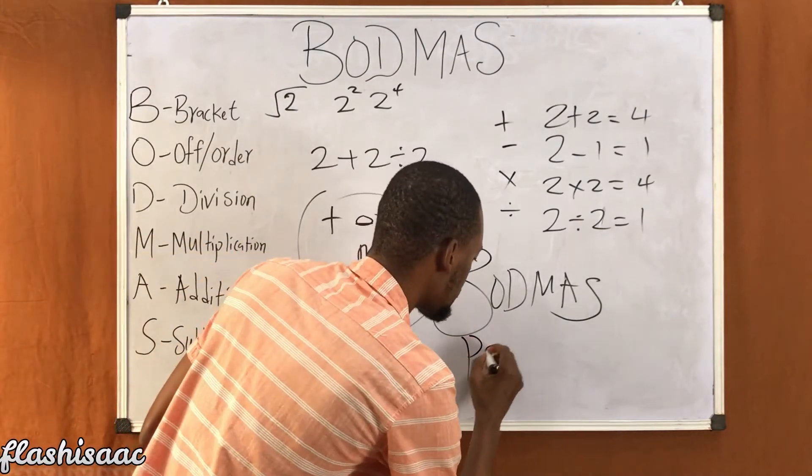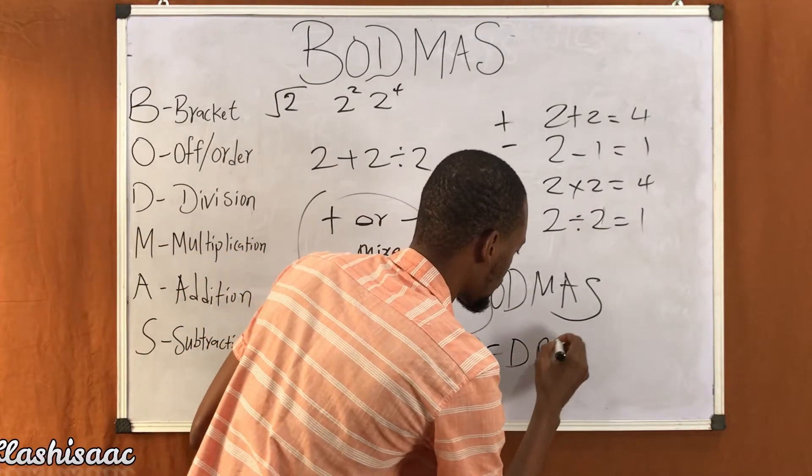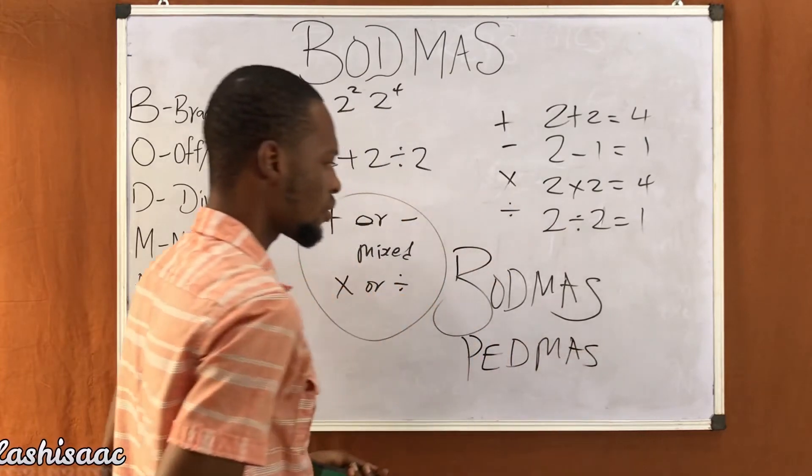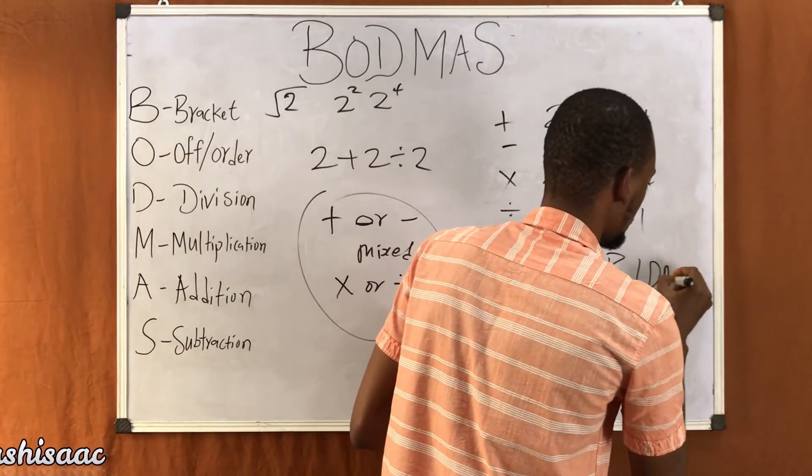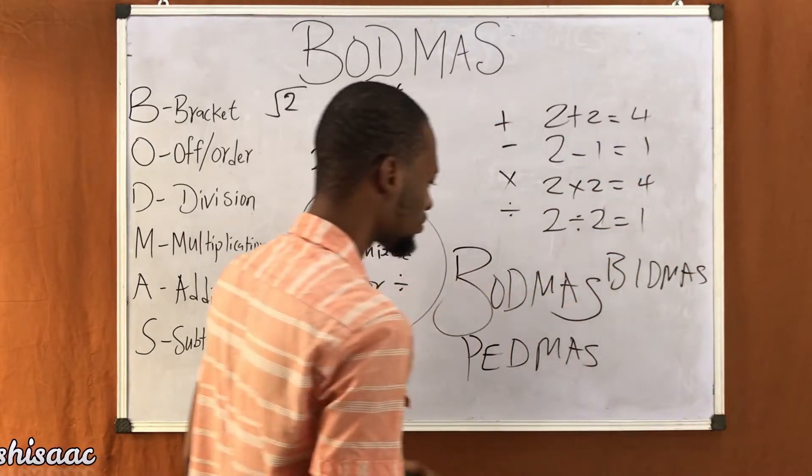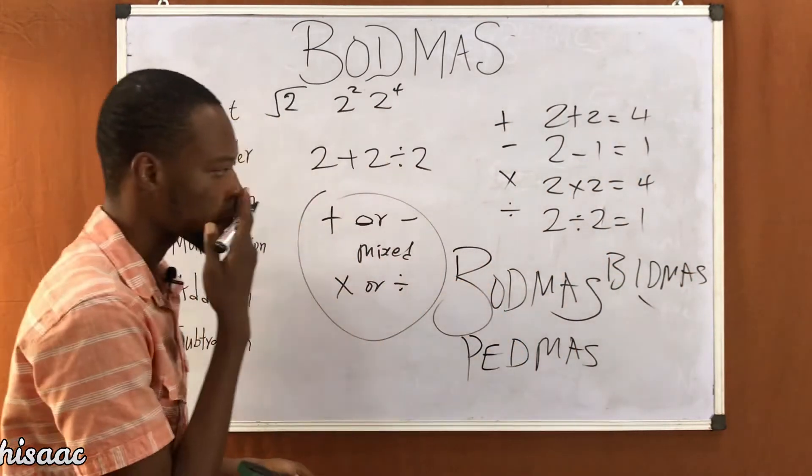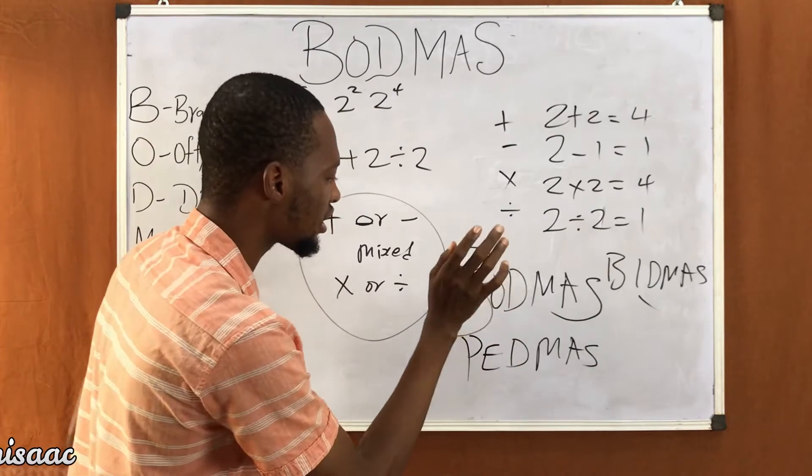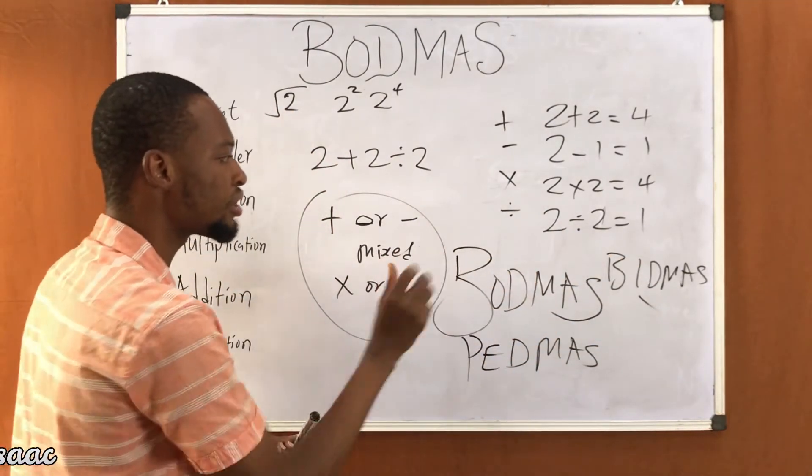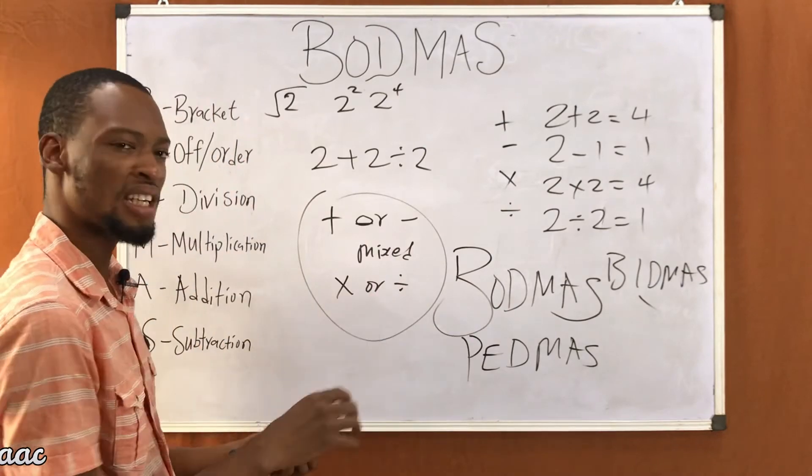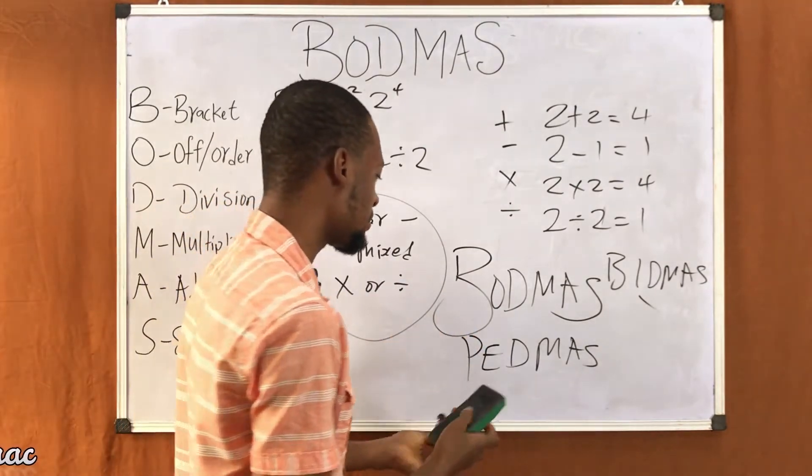Now this is BODMAS. In some regions it is PEMDAS, which is also the same as BIDMAS. So indices, parentheses, exponential, division, and so on. These are the same. When you see BODMAS, BIDMAS, or PEMDAS, they basically mean the same thing, okay.